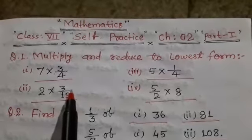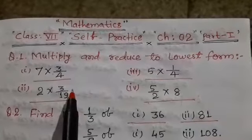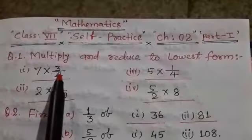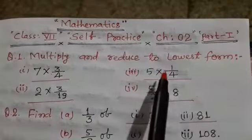Dear students, it is self-practice part 1 from chapter 2. Question number 1 is multiply and reduce to lowest form.